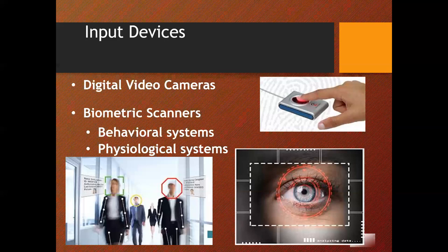With biometric scanners, users are authenticated based on who they are. Behavioral systems recognize signatures, voices, or keystroke dynamics. The physiological systems recognize fingerprints, retinas, faces, or even ears. Most of these devices connect directly to computer USB ports or are integrated into computer keyboards or cell phones.